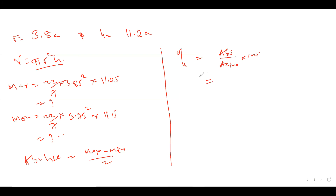Note that when you're doing questions and they talk of maximum absolute error in an operation, it is just the same as absolute error. There is no difference. Don't get confused. If you're doing a question and they mention maximum absolute error, it means the same thing.